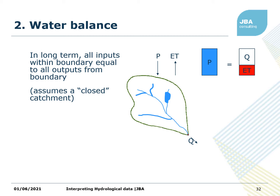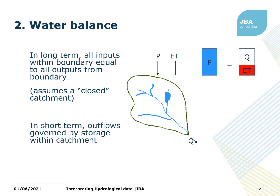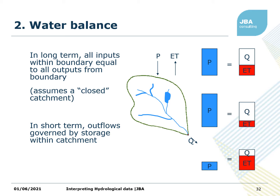This slide talks about the water balance — a really fundamental idea for hydrology. Basically, in the long term, all inputs within the boundary are equal to all outputs from the boundary in a closed catchment. So precipitation P is equal to flow Q plus evapotranspiration — your losses through evaporation and vegetation uptake. In the short term there might be some storage in the catchment, so precipitation equals flow Q plus evapotranspiration plus a change in storage. You can move that equation around to calculate different components of the situation.